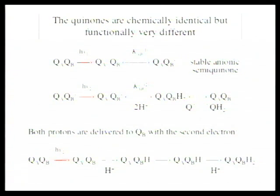So there are two important things to note here. First of all, although these are chemically identical, the environment around them makes it possible for the first electron to be favorably transferred to the secondary quinone. So there's a change or difference in the electron affinity or the redox potential of the second quinone compared to the first quinone. So the electron always goes forward.